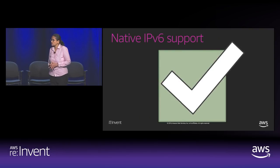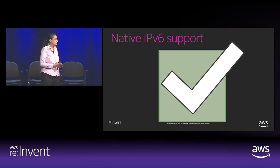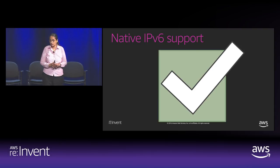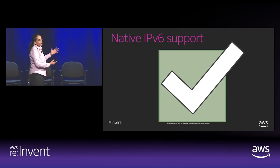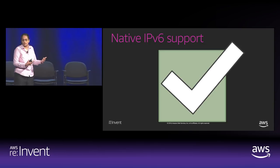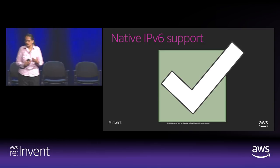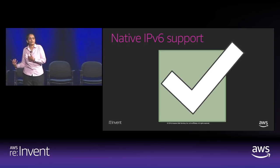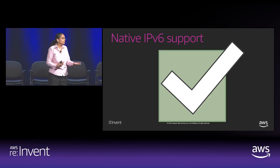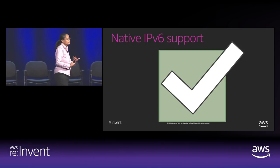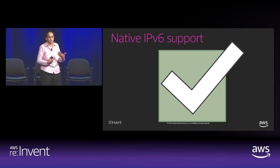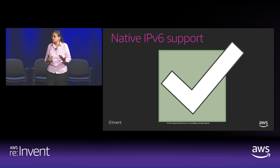IPv6: we support both IPv6 and IPv4 on the Application Load Balancer — it's dual-stacked. Traffic from the front is dual-stack, v4 and v6. On the backend, we support only v4 because most applications are not yet on v6.